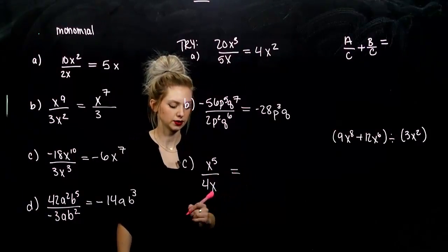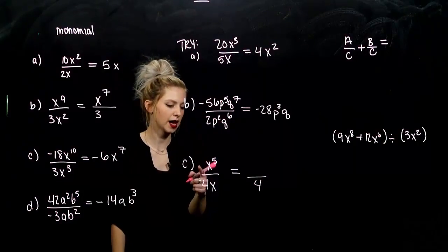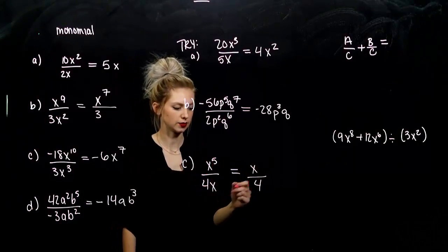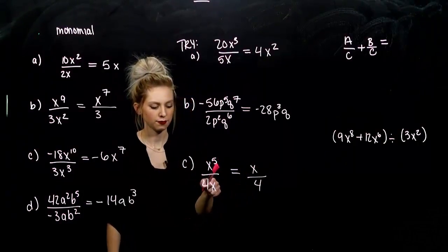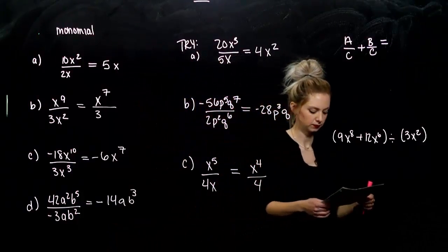And for the last, coefficients, again, 4 isn't going to move since it has nothing to cancel with the top. And how many x's do I have up in the numerator? 5, and I'm taking away 1. So, I've got x to the 4th over 4.